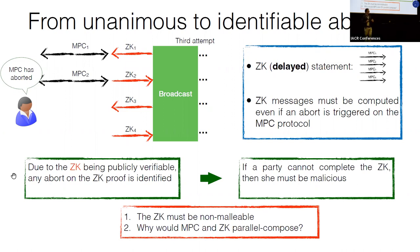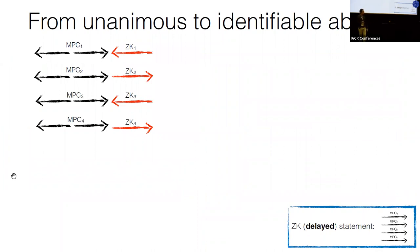Actually, standard zero-knowledge is not sufficient here — you need a stronger form involving normalizability of the zero-knowledge, which we show how to achieve in the paper. More importantly, we are running an MPC protocol and a zero-knowledge proof in parallel, but there is no reason why they would compose in parallel. In fact, they don't, or at least we don't know how to prove that they compose nicely.